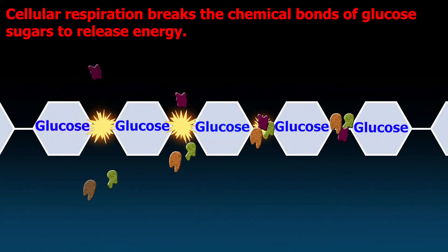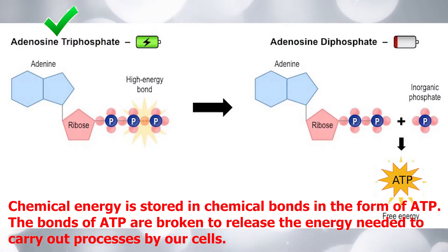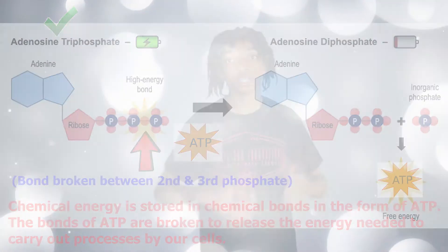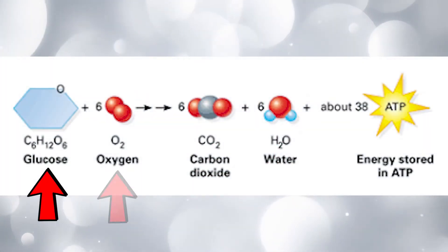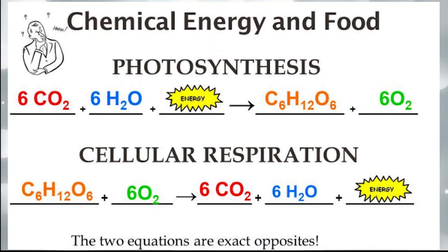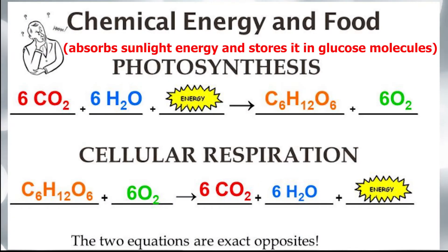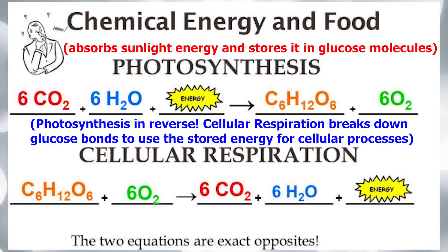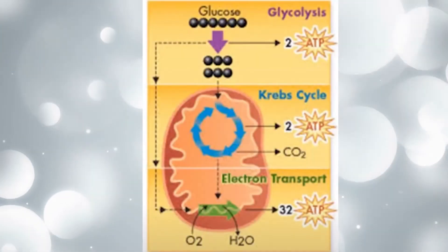Let's complete a brief overview of cellular respiration. Cellular respiration is a process that occurs in all living things that breaks down the chemical bonds of glucose sugars to release energy. This energy is stored in chemical energy bonds in the form of ATP. The bonds of ATP are broken to release the energy needed to carry out processes by our cells. So the formula for cellular respiration is: glucose plus oxygen yields carbon dioxide, water, and energy. Cellular respiration is like photosynthesis but in reverse. Instead of absorbing sunlight energy and storing it in glucose molecules, cellular respiration breaks down glucose molecule bonds to store energy for cellular processes.